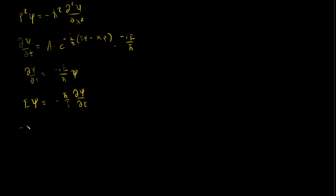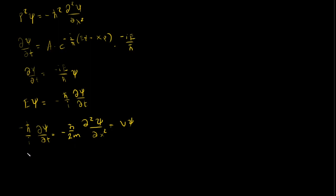Our main equation then becomes: minus ℏ/i times ∂psi/∂t equals minus ℏ²/2m times ∂²psi/∂x² plus V·psi. Substituting and rearranging, we get iℏ times ∂psi/∂t equals minus ℏ²/2m times ∂²psi/∂x² plus V·psi. This equation is the one-dimensional, time-dependent Schrödinger equation.